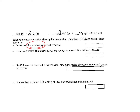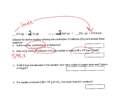The balanced equation tells us that one mole of CH4 is going to release 212.8 kilocalories. If we need to make 598,000 kilocalories of energy, then according to the balanced reaction, one mole of CH4 produces 212.8 kilocalories. So we can take 598,000 kilocalories and divide it by 212.8 to find out how many moles of methane we're going to need.